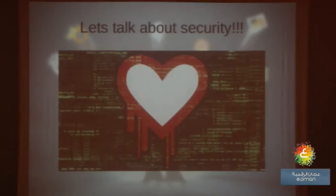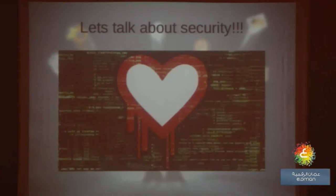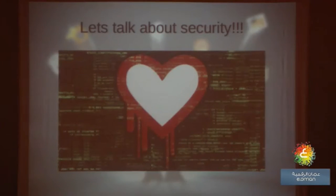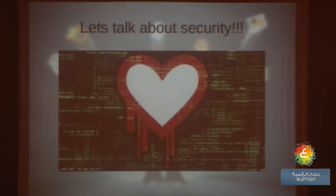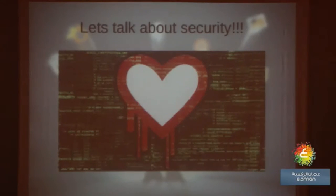Heartbleed was a flaw found in OpenSSL exactly two years back, and it changed the way open source security works. It's a very simple flaw: if I know you have an account with omanbank.com and you've logged in, I can send a packet to Oman Bank's web server, and it will send me a dump of all the usernames, passwords, credit card and debit card numbers, and CCV numbers. It's a perfect security flaw, and it changed the way people looked at open source security.